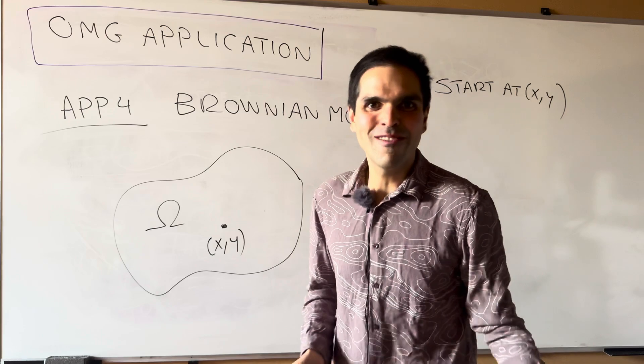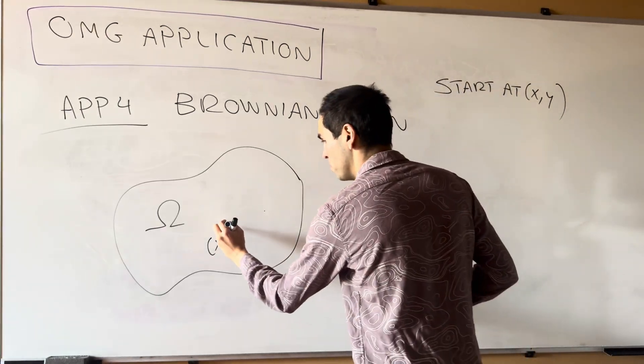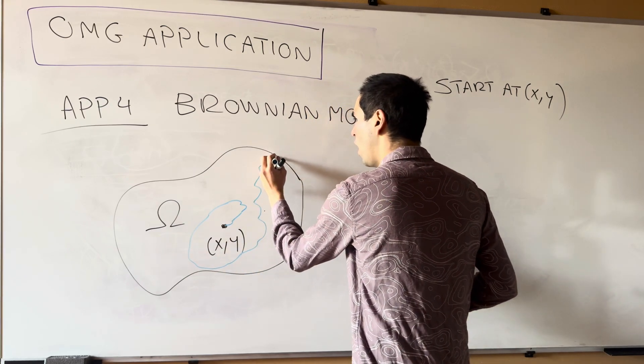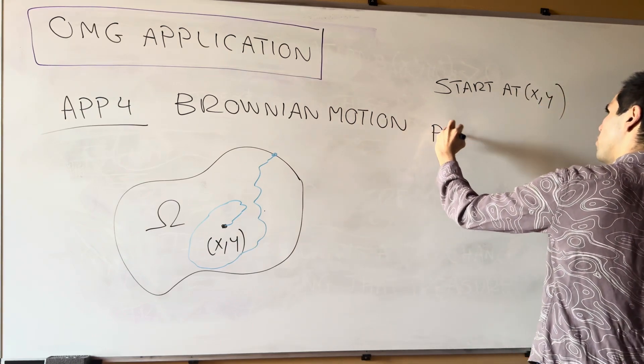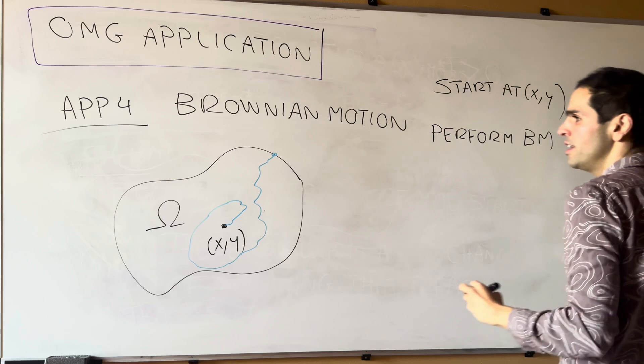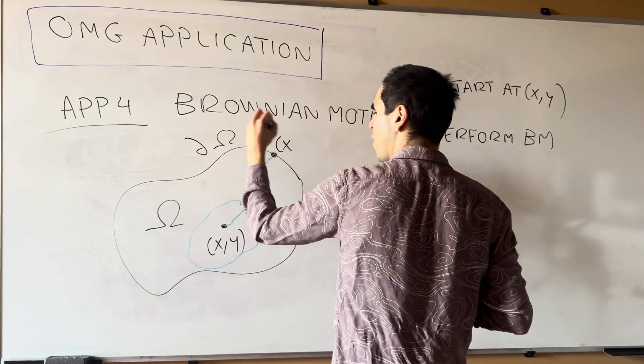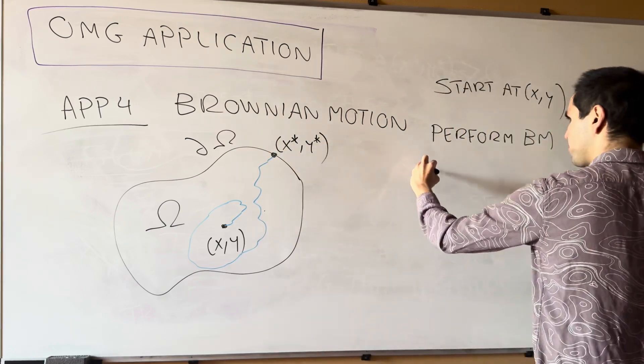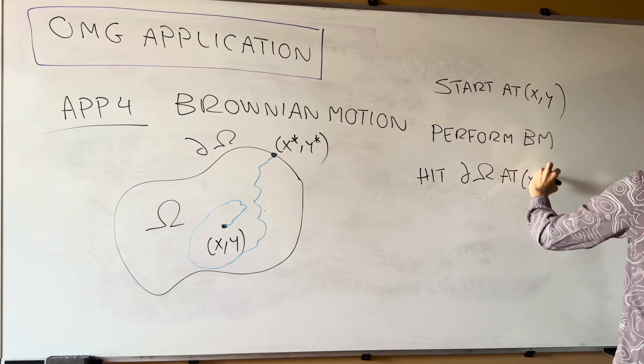And it's late at night, you may have partied too hard, and so perform Brownian motion. So random motion until you hit the wall at a certain point. So perform Brownian motion and then hit what's called the boundary, partial omega, at some point x star y star.